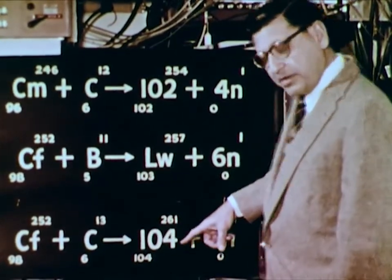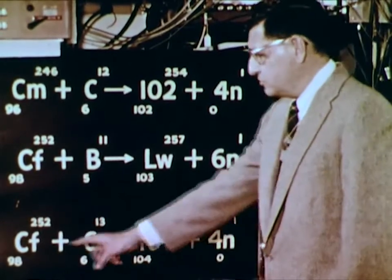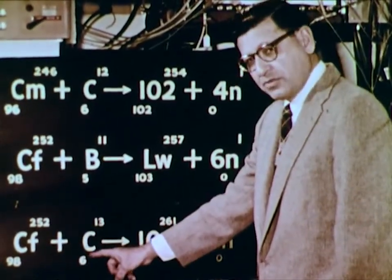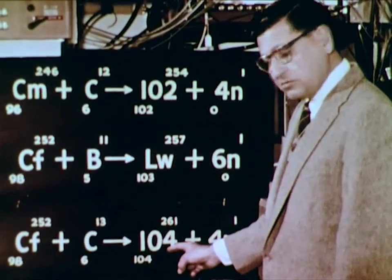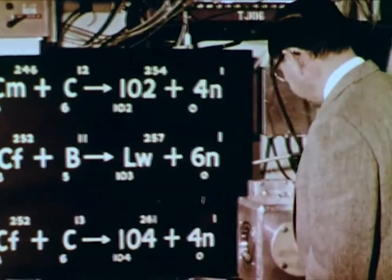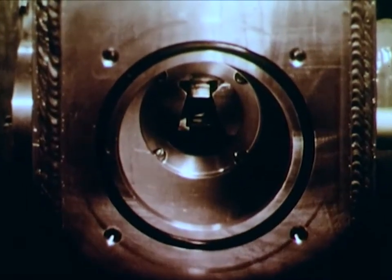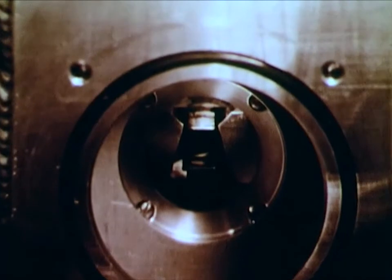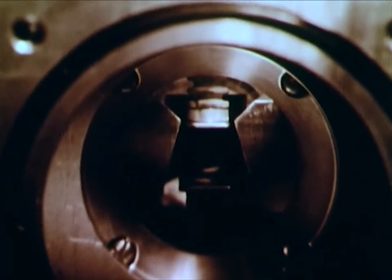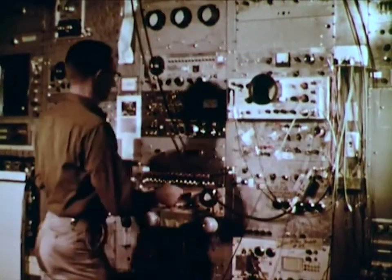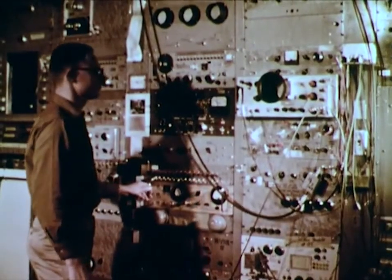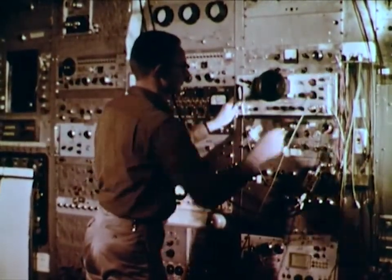Now we are prepared to try and make element 104, and we hope to make it by this reaction. We will use the same element 98 californium, but this time we will use carbon-13 ions to try and make this reaction go. The isotope that we will try to find is short-lived, and we will try to detect it in this apparatus. With this instrument called a velocity selector and its related electronic equipment, we can detect and record the decay of even a single atom of a radioactive element whose half-life may be so short that it cannot be identified by elution behavior. The electrical impulses from this detector are piped to the counting area, where they are amplified and analyzed in various ways. The probability of causing the nuclear reaction to make an isotope of element 104 is so small that we may have to bombard for hours before seeing even a single decay event.